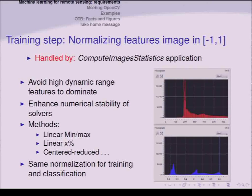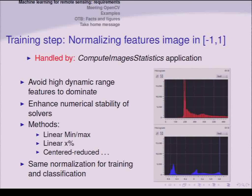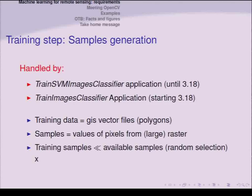Bringing features into a range between 0 and 1, or minus 1 and 1, also enhances numerical stability. There are several normalization methods: linear min-max stretching, linear stretching by clipping the histogram, or centered radius normalization. Importantly, you must use the same normalization for training and for classification. In OTB, we have an application that estimates statistics from your input image and then applies the normalization consistently throughout the process. Starting from version 3.18, the training application was renamed to Train Images Classifier.